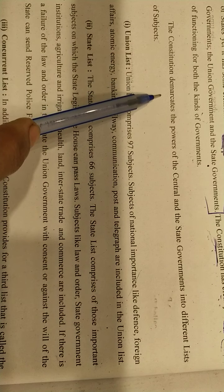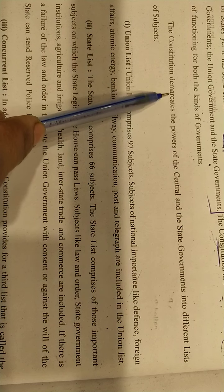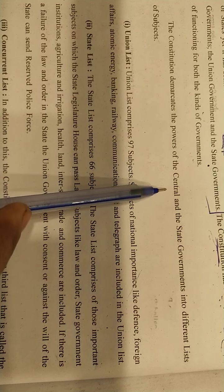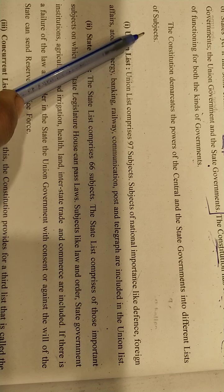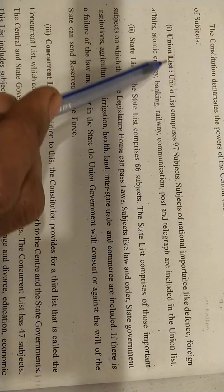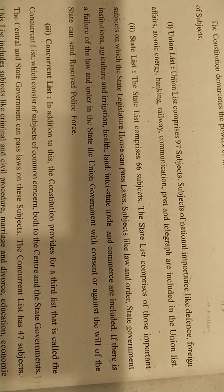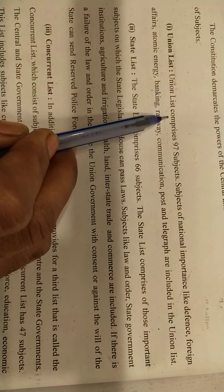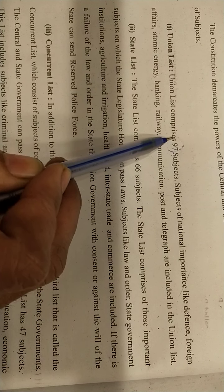The constitution demarcates — meaning creates a boundary and differentiates — the power of central and state government through different lists. The Union List contains 97 subjects that are the responsibility of the central government — the subjects of national importance.